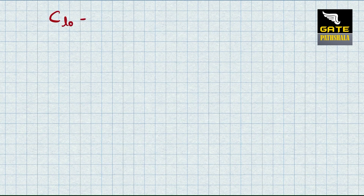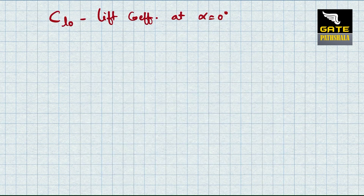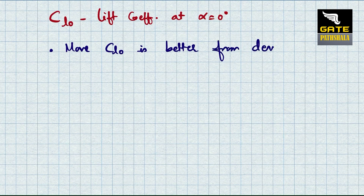CL0 is the lift coefficient at alpha equals 0 degrees. From a design point of view, more CL0 is better, since it implies we can produce positive lift even at zero angle of attack.